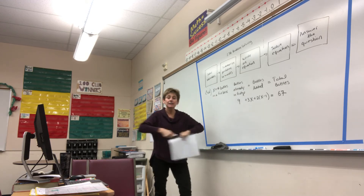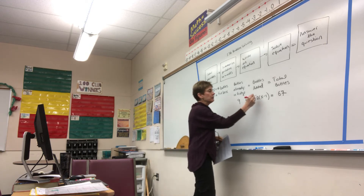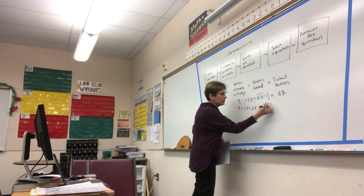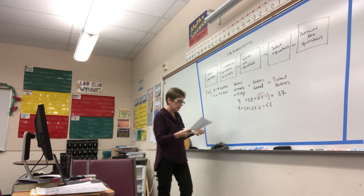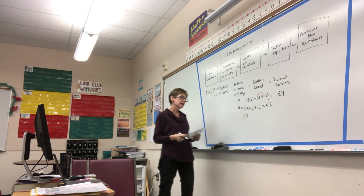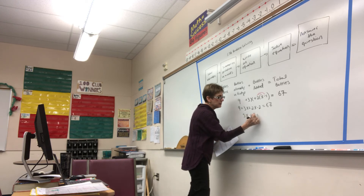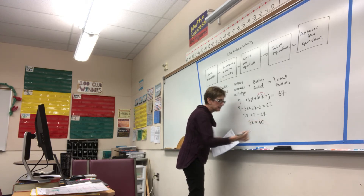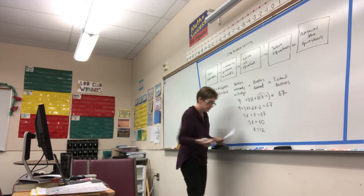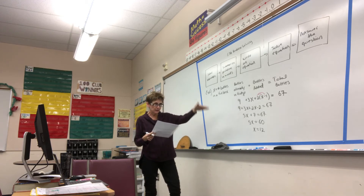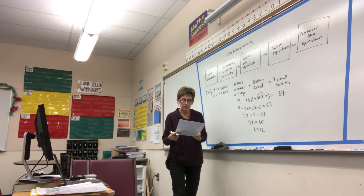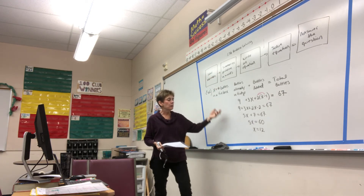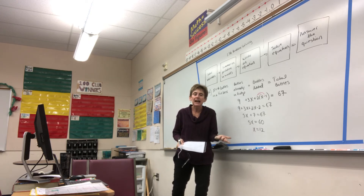Now we distribute and combine like terms. Distributing the two gives us 9 plus 3x plus 2x minus 2 equals 67. Combining the x terms gives 5x, and nine minus two gives seven, so 5x plus 7 equals 67. Subtracting seven from each side gives 5x equals 60. Dividing by five gives x equals 12. The question asked us to find the number of bottles in a full box — x is the number of bottles in a full box, and x equals 12, so we've answered the question.